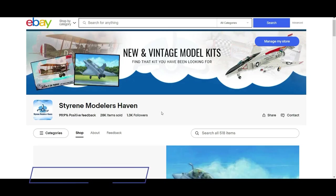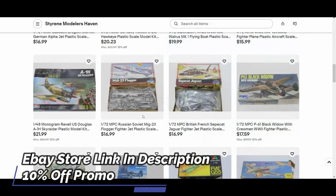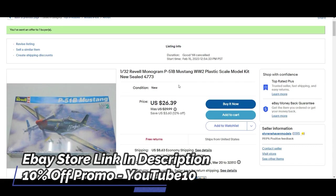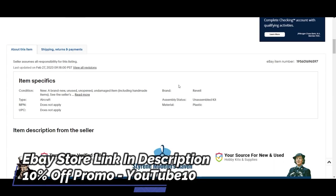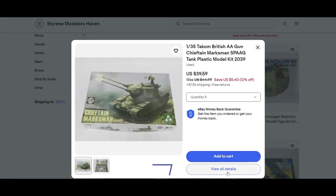Did you know I have an eBay scale model store? That's right, I sell new and vintage model kits and accessories. Be sure to check it out—I've left a link in the description. Use code YouTube10, that's the number 10, to get 10% off any purchase made in my eBay store.